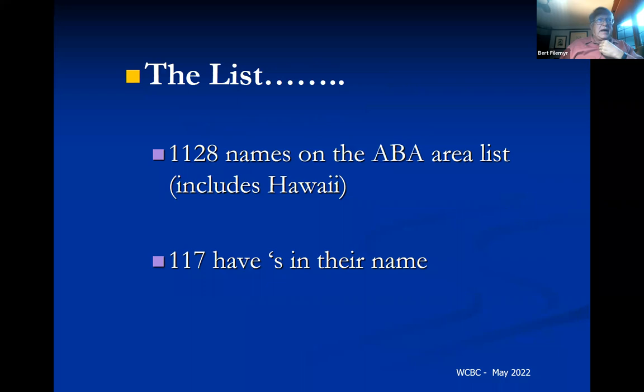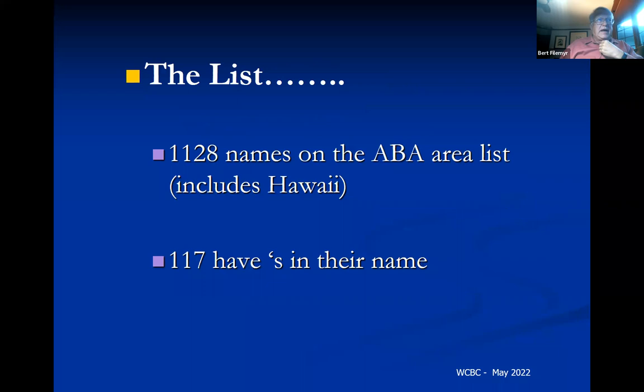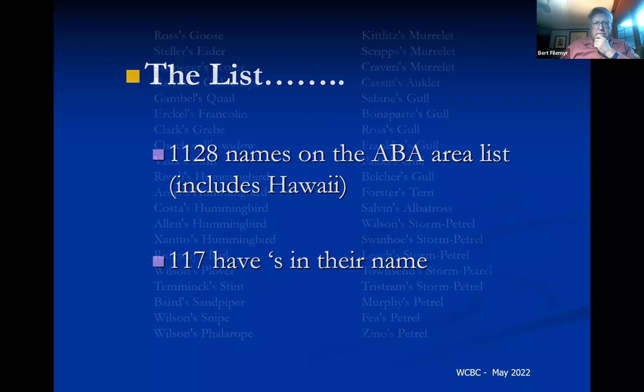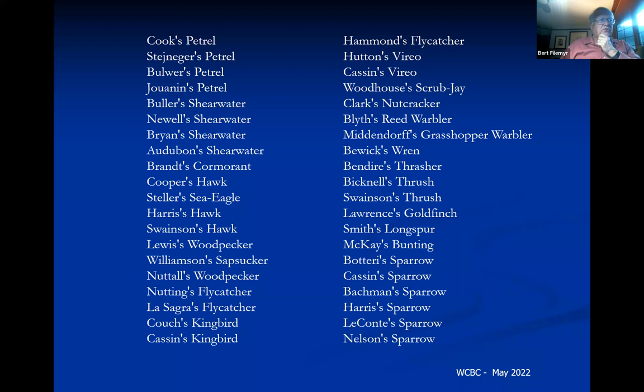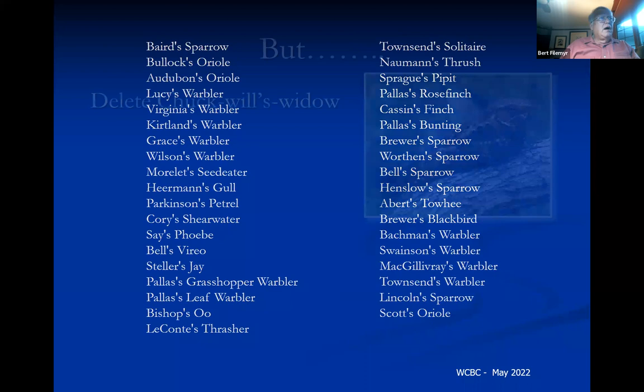Presently there are 1,128 names on the ABA area list, which includes Hawaii. Of those, 117 have apostrophes in their names. Here is the full list of birds with an apostrophe named in honor of someone — honorific names.